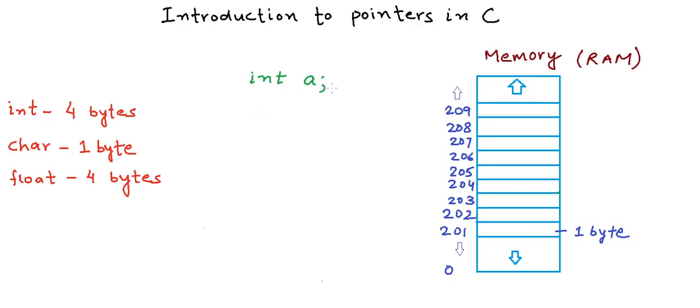So as soon as the computer sees a declaration like this during the program's execution, it knows that this is an integer variable so I need to allocate 4 bytes of memory. Let's say in our example it allocates memory starting address 204 to address 207 for A, and the computer has an internal structure, a lookup table, where it stores this information that there is a variable A, it is of type integer, and it is located at address 204, which is the starting address of the variable.